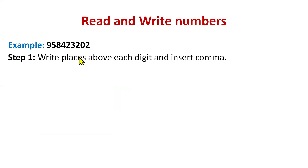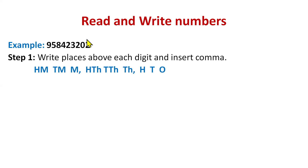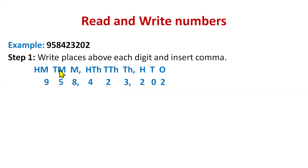Now let's start with the numeral form — reading and writing a number in word form. Here we have the example 958,423,202. The first step is to write places above each digit and insert commas according to the international system. Above these digits you write the place value chart starting from the right side: ones, tens, hundreds, thousands, ten thousand, hundred thousand, million, ten million, hundred million.